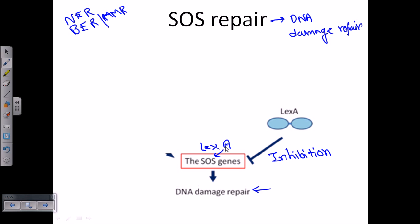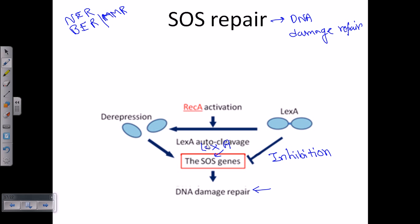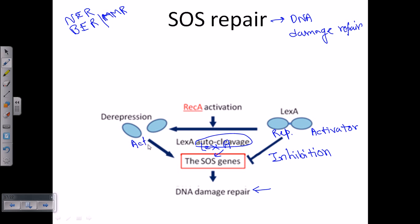When DNA damage occurs, certain molecules are activated which deactivate LexA. Deactivation means the breaking down of LexA through a process called autocleavage — LexA cleaves itself. LexA has a remarkable structure with an activator domain and a repressor domain. When the repressor is attached to the activator, the activator is non-functional, but upon autocleavage the activator becomes free and is ready to drive SOS gene transcription.